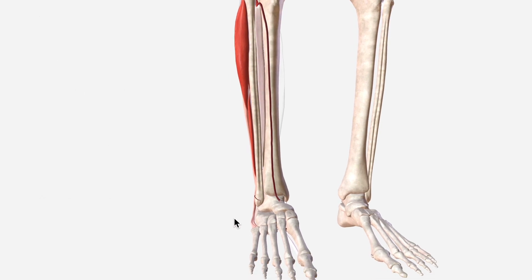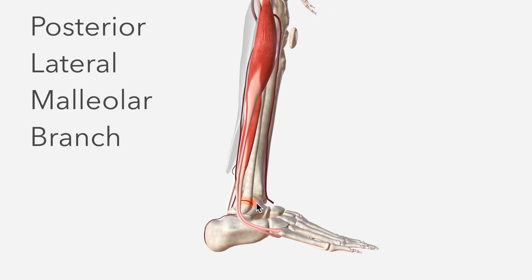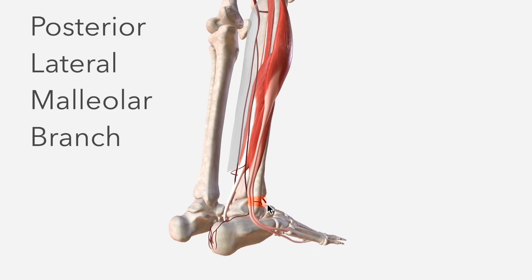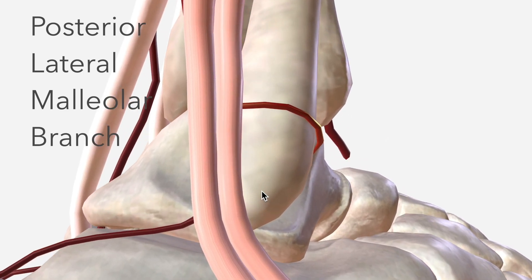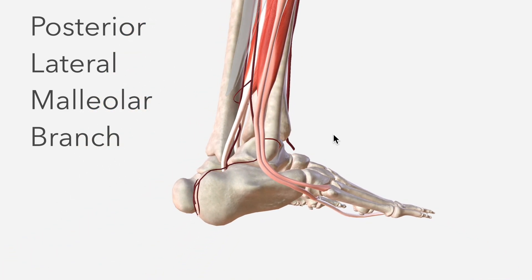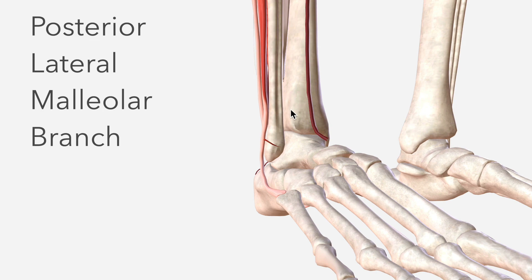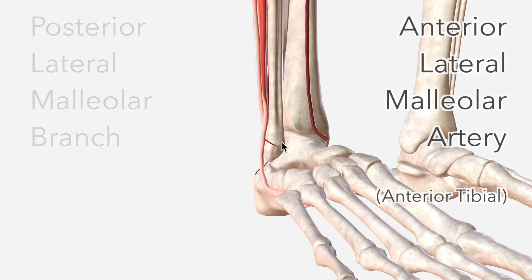The next branch from the fibular artery is the posterior lateral malleolar branch, just here, supplying the inferior tibiofibular syndesmosis joint, and also anastomosing with the anterior lateral malleolar artery.